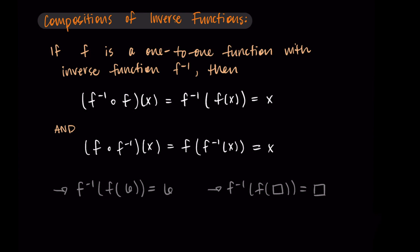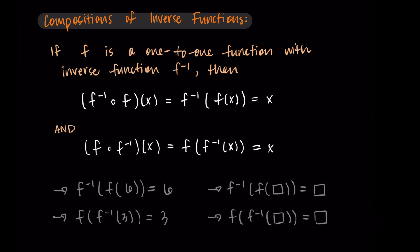Similarly, we can swap the order. So if we have f of f inverse of 3, this is just going to be 3. When we have f and its inverse and we compose them, we're always going to get back to where we started. So f of f inverse of anything is just that thing. This is convenient if you're answering simple questions using a table or a graph, where you need to find f composed with f inverse, or f inverse composed with f — you can just know that the value remains unchanged.